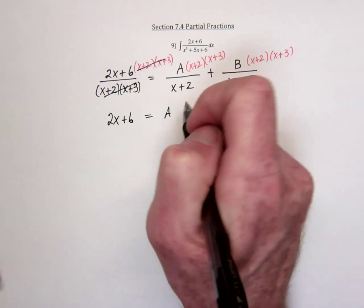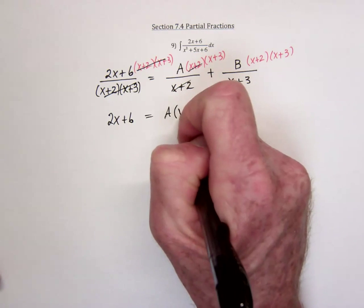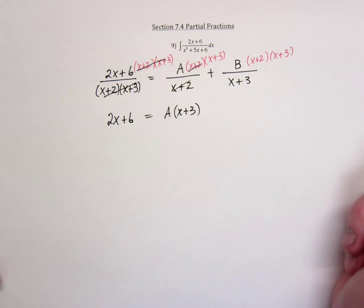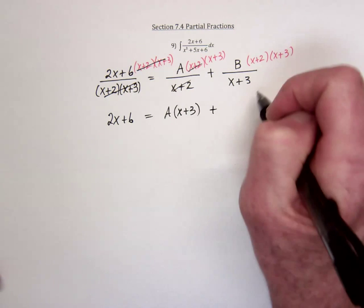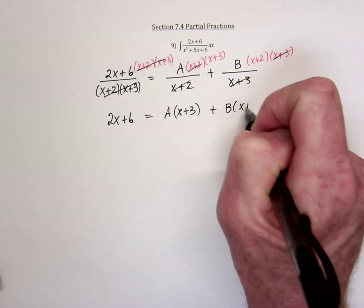Then we would have A times, so these cancel, A times x plus 3. And you don't need to multiply that out. You can just leave it factored like that. Over here, we would have these cancel. B times x plus 2.